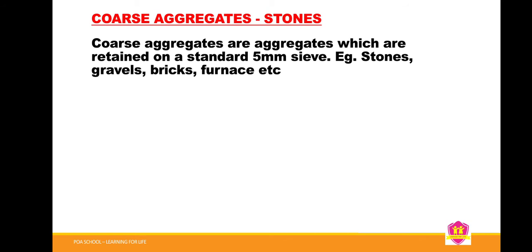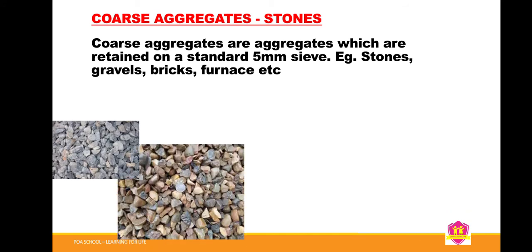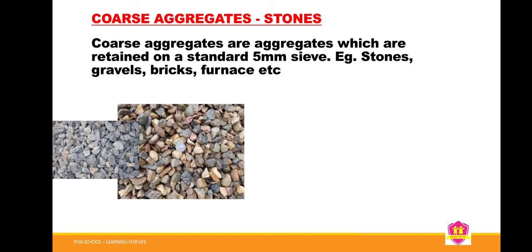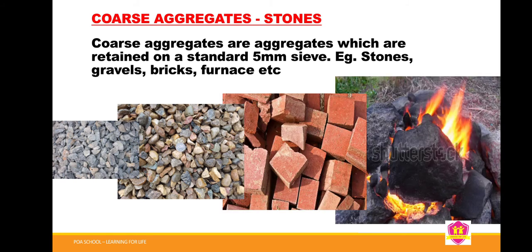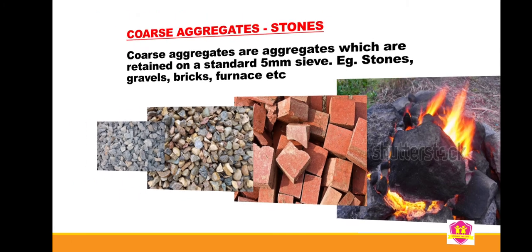Mostly, all coarse aggregate is retained on the standard 5mm sieve. Examples of coarse aggregate include stones, gravels, bricks, and finally, fenders. All these are typical examples of coarse aggregate.